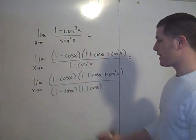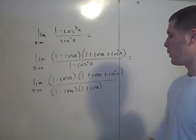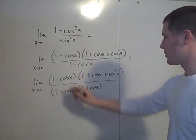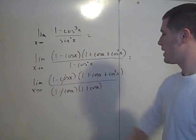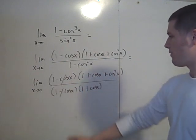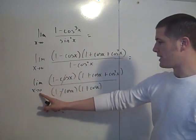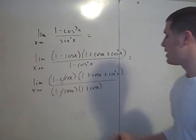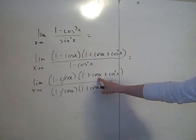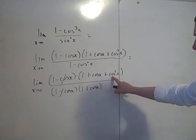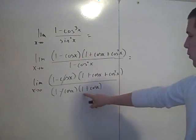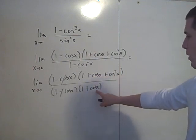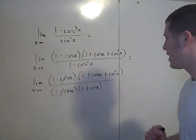You can see that the 1 minus cosine x cancels from the numerator and denominator. You're left with the limit as x goes to 0 of 1 plus cosine x plus cosine squared x, all over 1 plus cosine x.